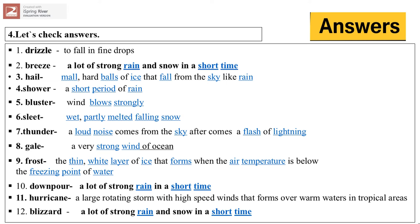Alright, good students, let's check the answers. Drizzle: to fall in fine drops. Number two, a lot of strong rain, snow in a short time: breeze. Number three, hail: small, hard balls of ice that fall from the sky like rain. Number four, shower: a short period of rain. Number five, blaster: wind blows strongly. Number six, sleet: wet perfume melts falling snow.